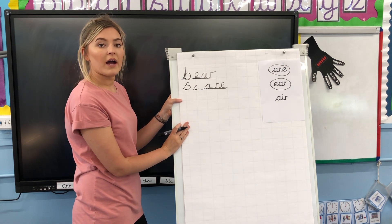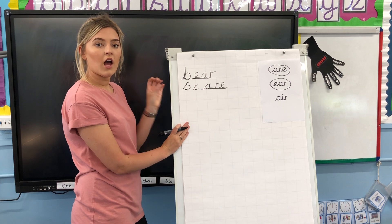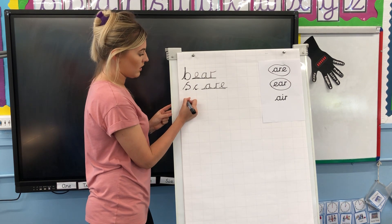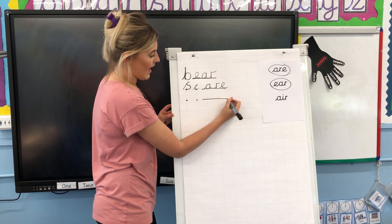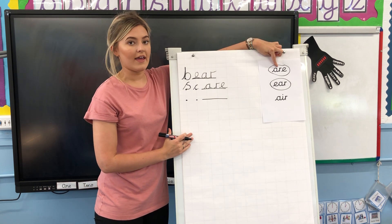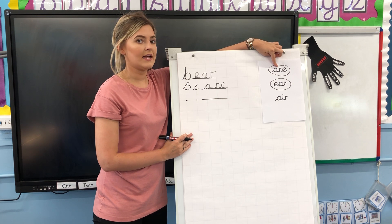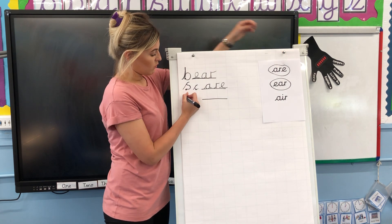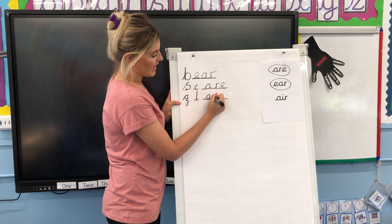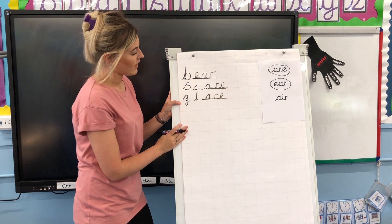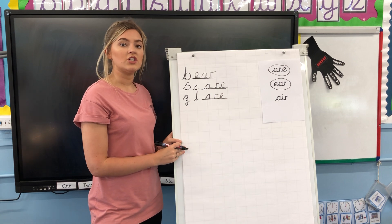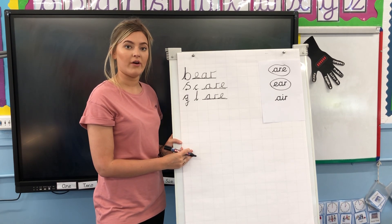Last word that we're going to practise writing is the word Glare. And we are spelling it using the I-R-E. Have a go at spelling the word Glare. Well done if you've used the letter G, L, and I-R-E. Have a go at challenging yourself now and writing a sentence using any of the words that have the Air phoneme.